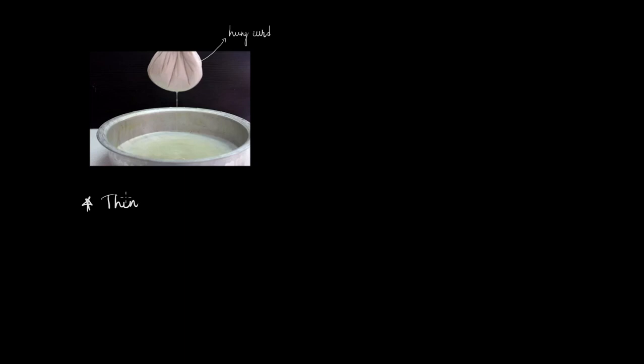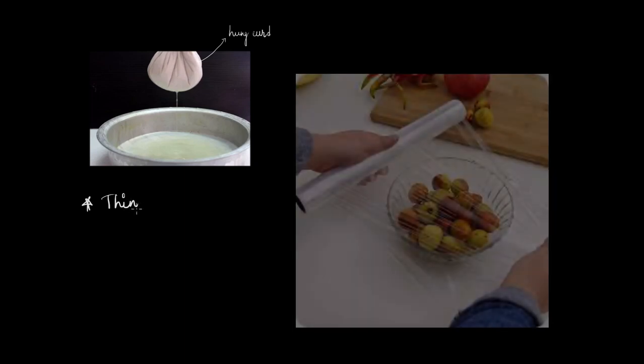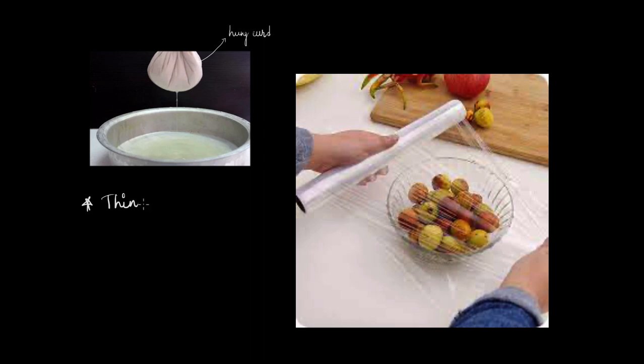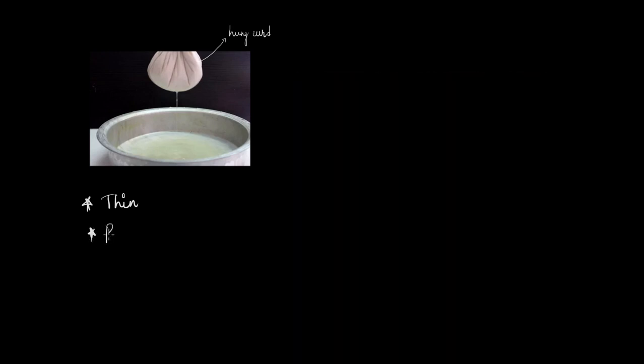Okay, so does that mean we can use anything which is very thin? For example, the cling film which is used in the kitchen to wrap food, the plastic sheets. Can we use those? Probably not, right? Because nothing can pass through a plastic sheet without cutting and tearing it, right? So we need something which is permeable. So the second reason for using this thin muslin cloth is because it is permeable, right?